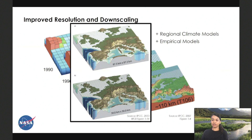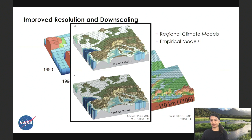Climate models were designed to understand the response to combined and individual driving factors like methane and CO2, and also to understand the impacts of policy choices and provide forewarning for adaptation. They are not designed for perfect short-term or long-term predictions — for daily or hourly forecasts, we use weather models. They are also not designed to study truly local information due to resolution limits, hence the necessity of bottom-up approaches when thinking of solutions on smaller scales.